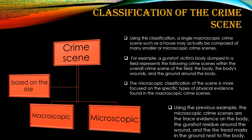For example, a gunshot victim's body dumped in a field represents the following crime scenes within the overall crime scene of the field: the body itself is a crime scene, the body's wounds are a crime scene, and the ground around the body can also be a crime scene.